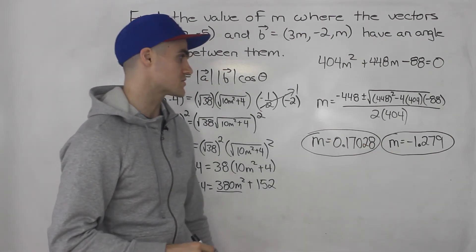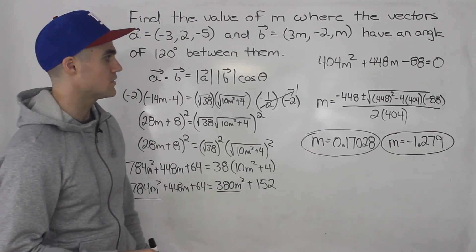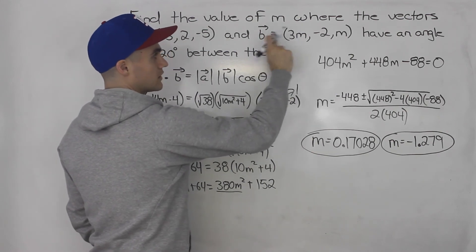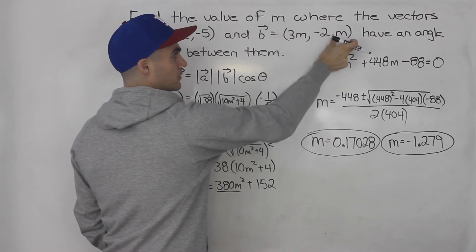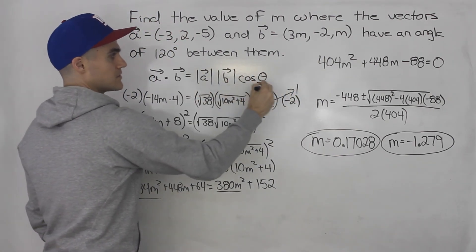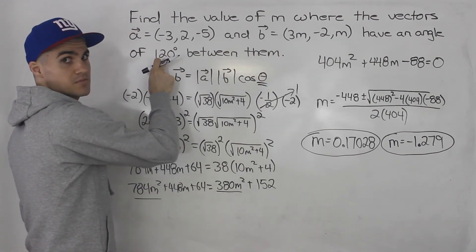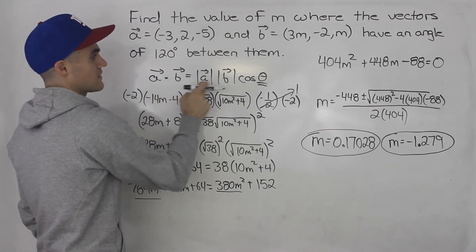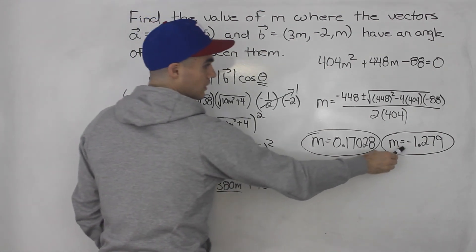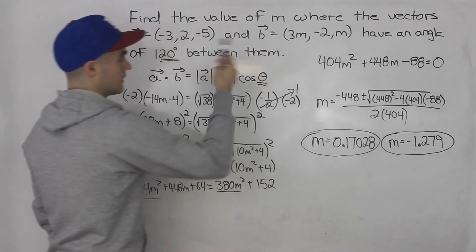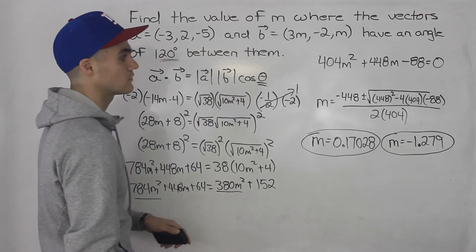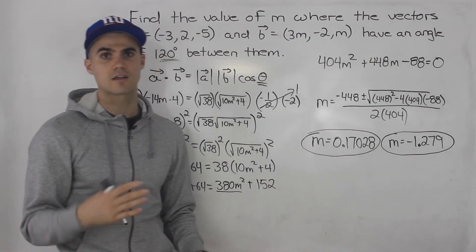Not the smoothest answer — these are decimals — but nevertheless they are the answers. You can actually check these answers. Take an m value, plug it into vector b to get it in component form with decimal values. Then plug everything into the dot product formula and solve for the angle theta. When you solve for theta, it should be something very close to 120 degrees. You can do the same check with the other m value — find the dot product, find the magnitudes, solve for theta, and again it should be very close to 120 degrees.